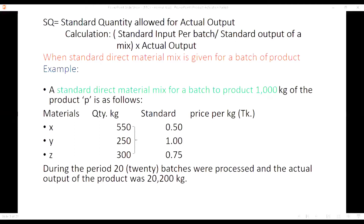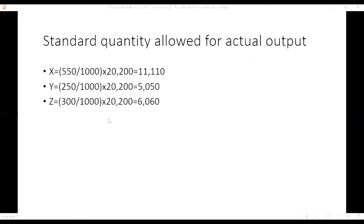We only have to calculate standard quantity allowed for actual output. The formula is standard input per mix divided by standard output of a mix, that is 1,000, multiplied by actual output. Actual output was 20,200 kg. So the calculation is: 550 divided by 1,000 for X, 250 divided by 1,000 for Y, and 300 divided by 1,000 for Z, all multiplied by 20,200 kg. Standard quantity allowed for actual output: X is 11,110 kg, Y is 5,050 kg, and Z is 6,060 kg.